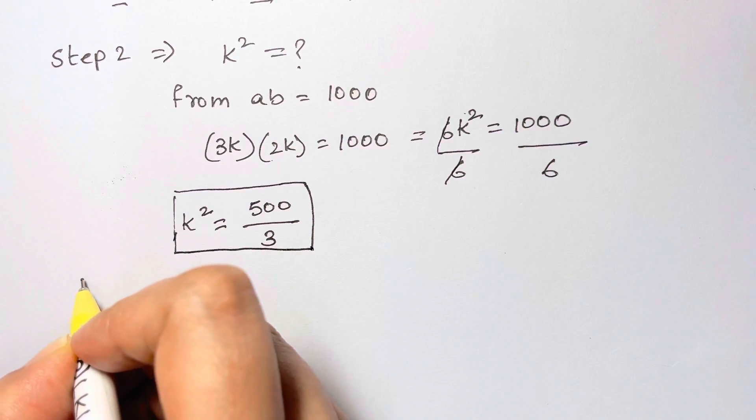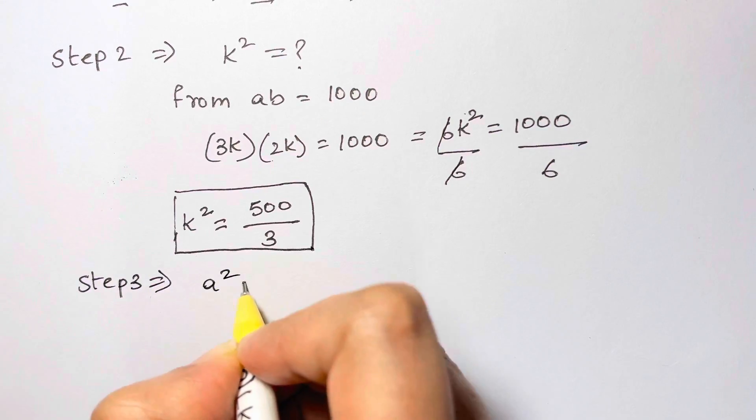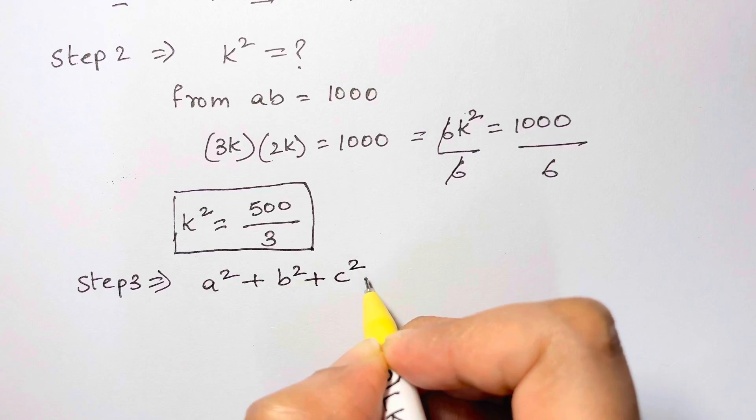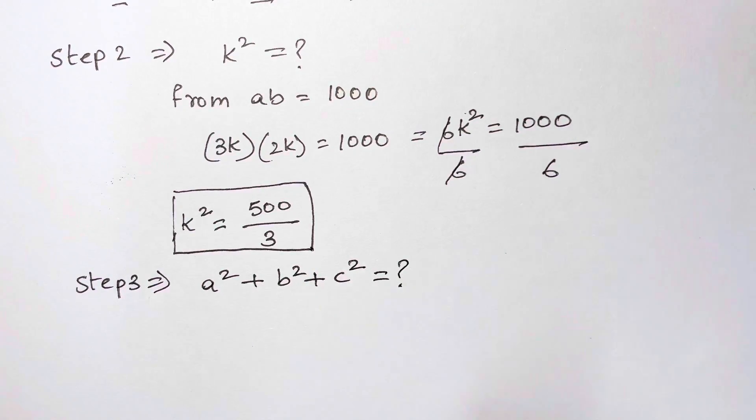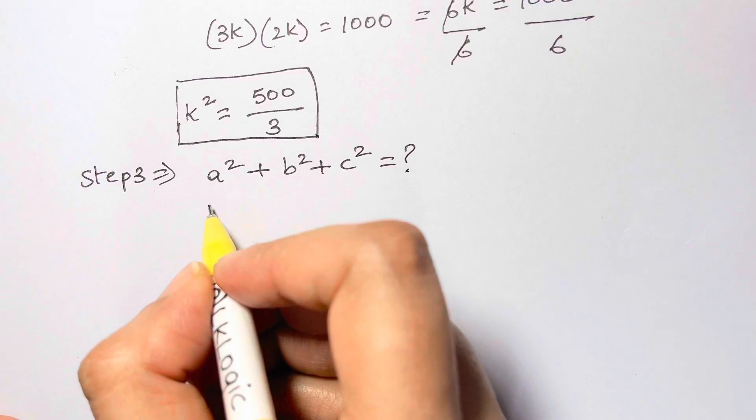Now, the main step, step number 3. That is to find a² + b² + c² is what? So let's find out what is our a² + b² + c². As we know, a is equal to 3k.